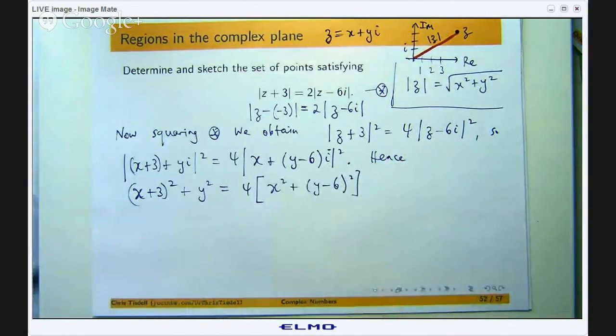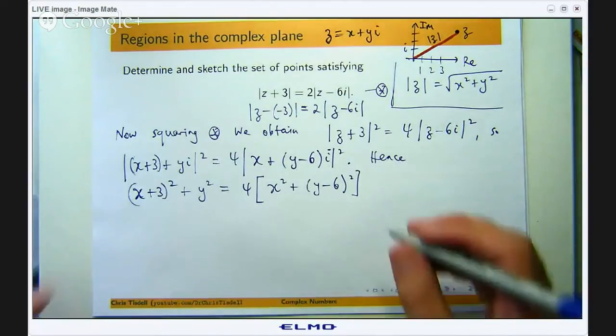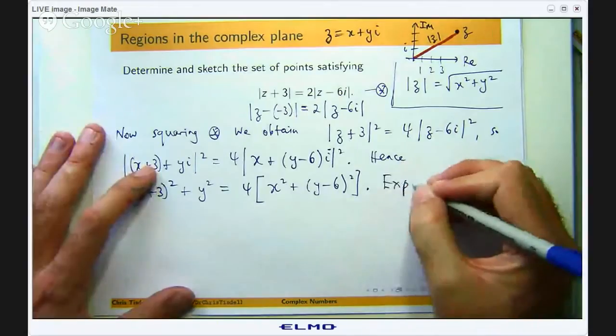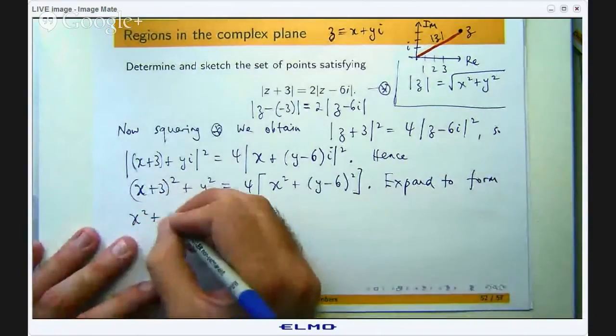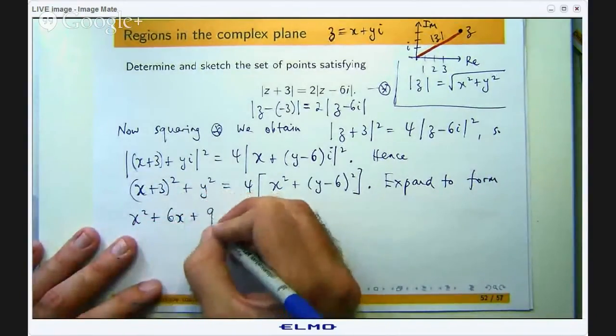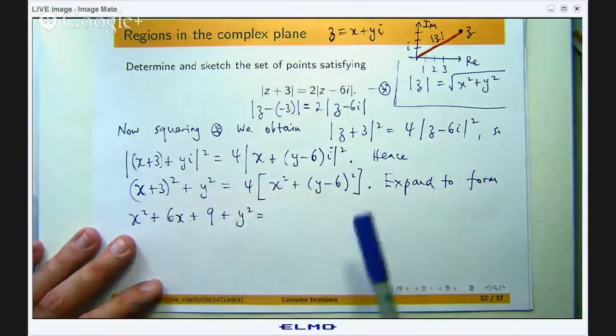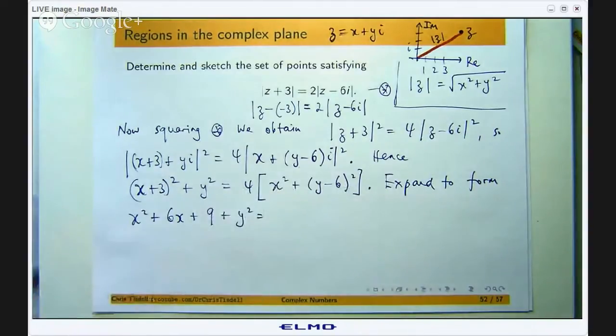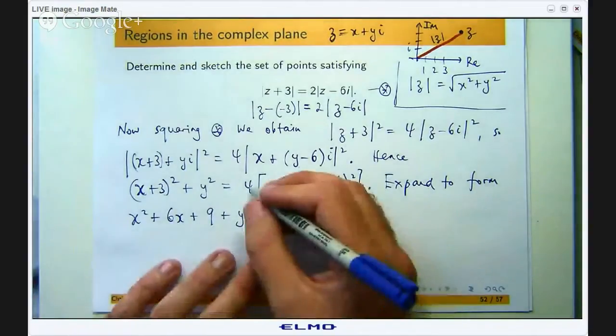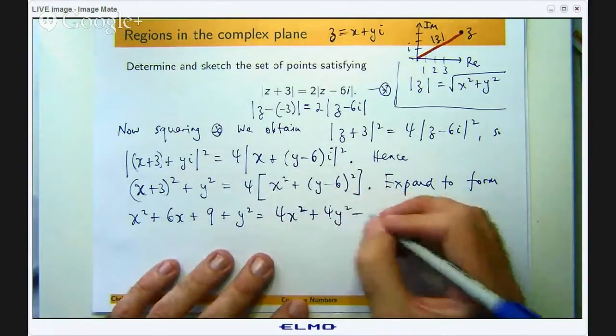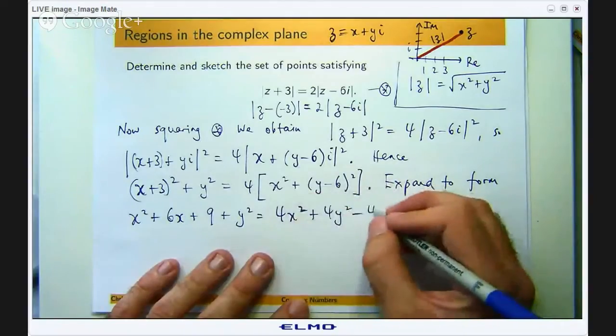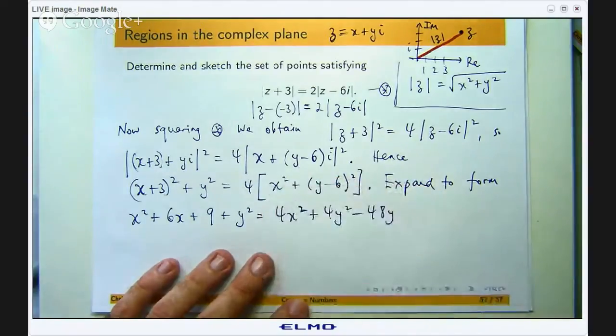So now we have got something that looks like a Cartesian form and our challenge now is to simplify this into something that is recognizable. So let us expand. Over here I am going to get x squared plus 6x plus 9 and over here I am going to get y squared minus 12y plus 36. So if I expand, if I distribute the 4, I am going to get something like the following: 4x squared plus 4y squared minus 12 times 4 minus 48 and 36 times 4 is going to be 144.